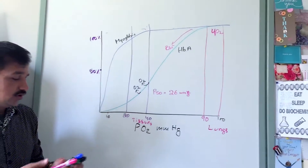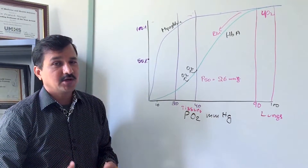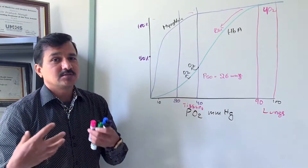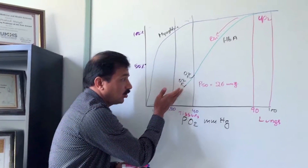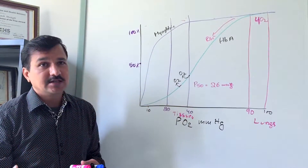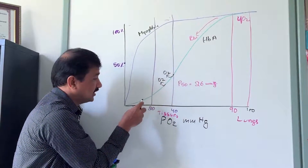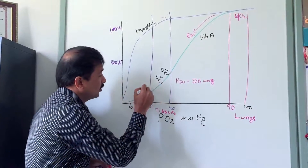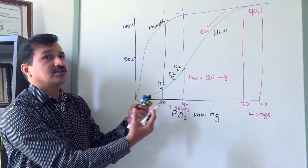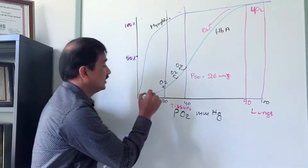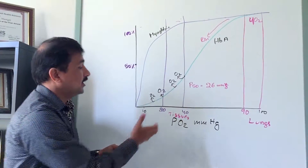The remaining two oxygen molecules are released when someone starts exercising. Exercise increases oxygen demand as the electron transport chain runs faster and respiratory rate increases. As partial pressure falls below 26 mmHg — say to 20 mmHg — another oxygen molecule is released, and if activity continues and pressure falls to 15 mmHg, the fourth molecule is also released.